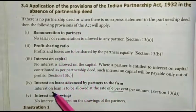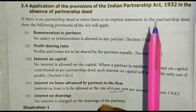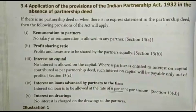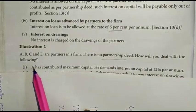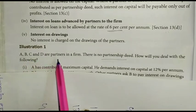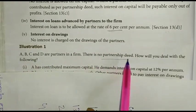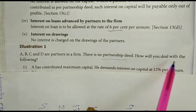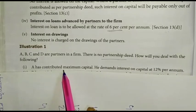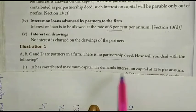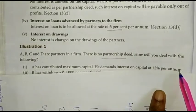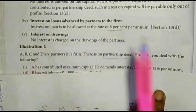Illustration 1: A, B, C and D are partners in a firm. There is no partnership deed. How will you deal with the following? First: A has contributed maximum capital and demands interest on capital at 12% per annum.